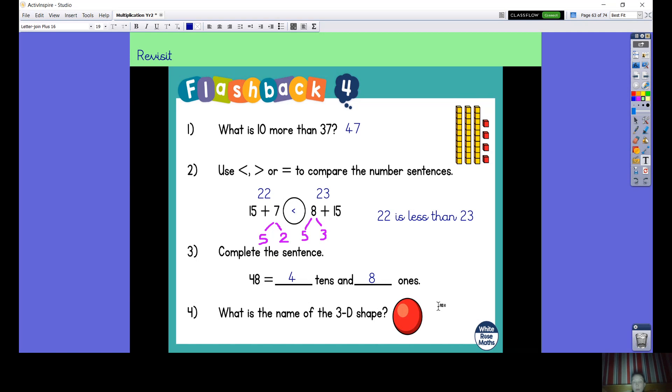Now it says what is the name of this 3D shape. Some of you might have been tempted to write circle, but remember that's our 2D shape. The 3D shape is the same as holding a ball and we call the ball shape, its real name is a sphere.